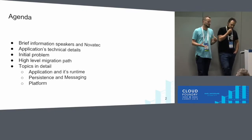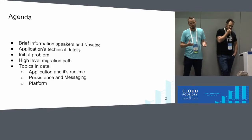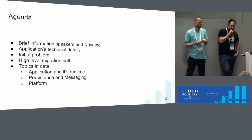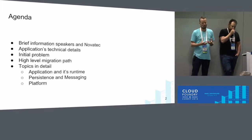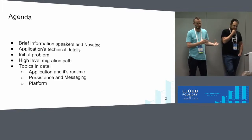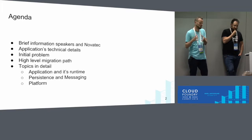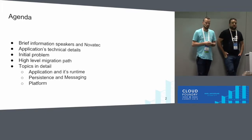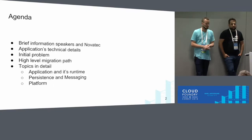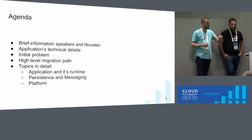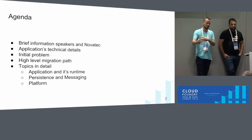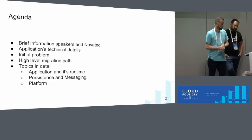We're going to describe the migration path — the individual steps we did to make the application ready to run on Cloud Foundry. First, we'll look at what it took to get the application into a cloud-ready state and make it deployable in a container environment. After that, we'll look at the platform, then persistence and messaging, and how we handled the back-end services.